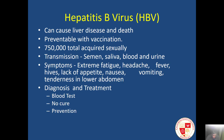Hepatitis B virus can cause liver disease and death. Transmission is through semen, saliva, blood, and urine — essentially body fluids. It is much more contractible than HIV, so you need to be careful about basic contact with other people's body fluids.